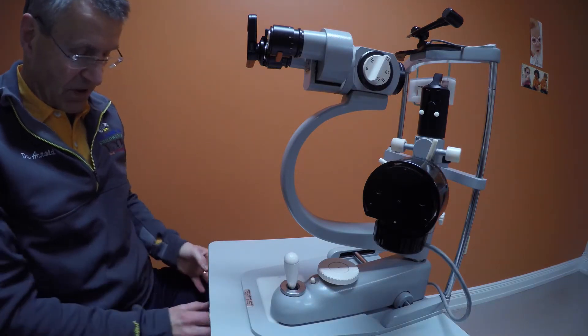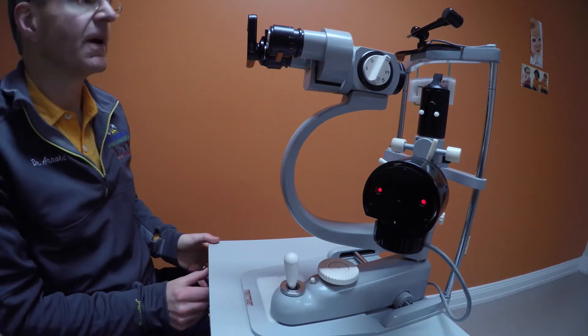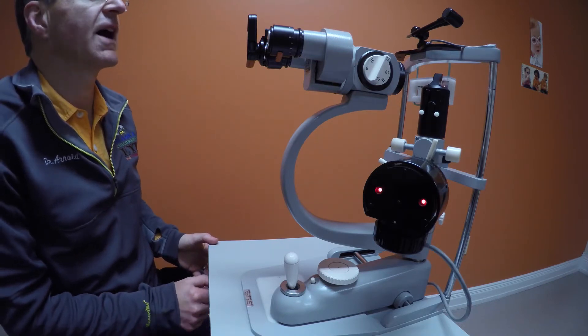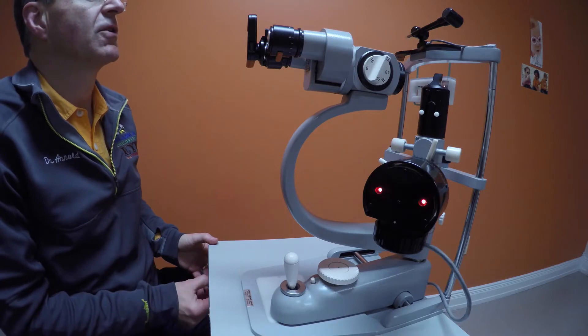The slit lamp is turned on with a button on the bottom, and that button also has a rheostat to turn it very bright or very dim.